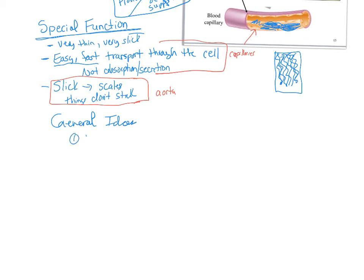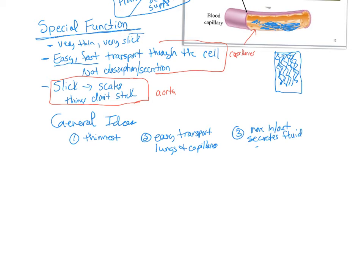Some general ideas: simple squamous is one of the thinnest tissues you'll find in the body, enabling easy transport — especially important in lungs and capillaries. Things move in and out, so you can secrete watery fluids easily and quickly. For example, serous fluid passes through simple squamous epithelium from the plasma of the blood directly into the space between the parietal and visceral peritoneum, pleura, or similar cavities.